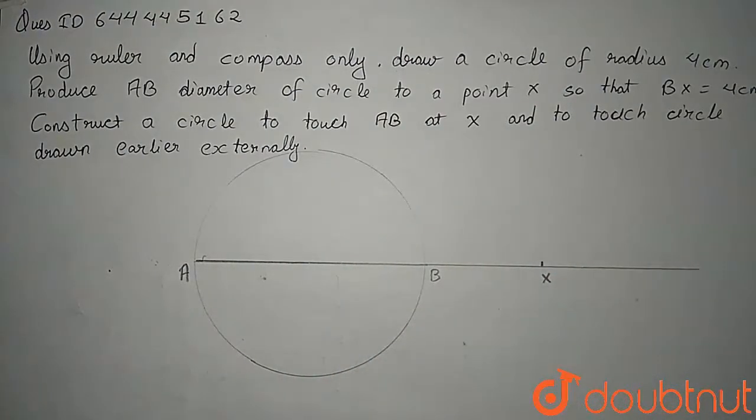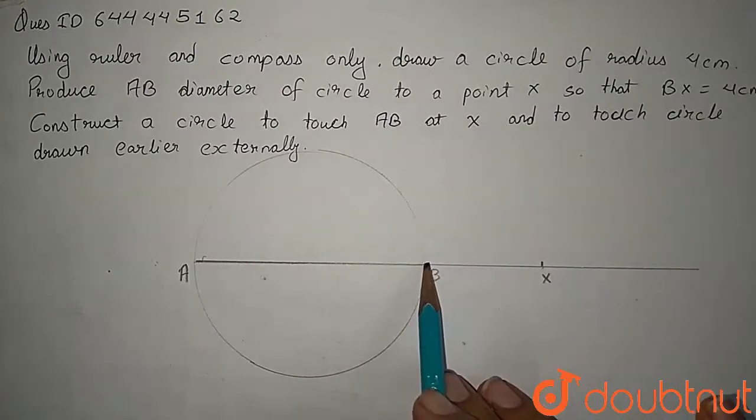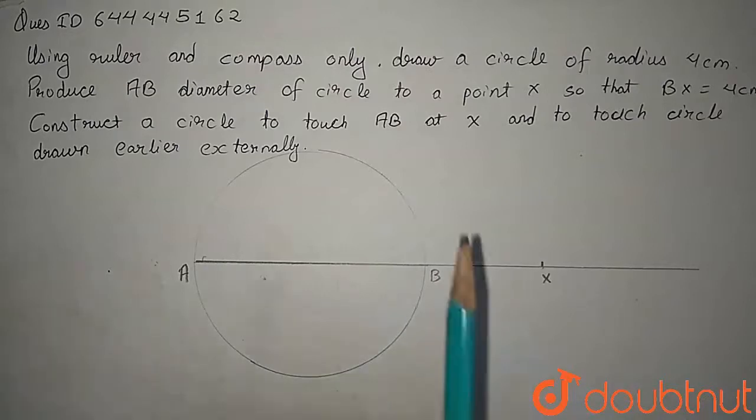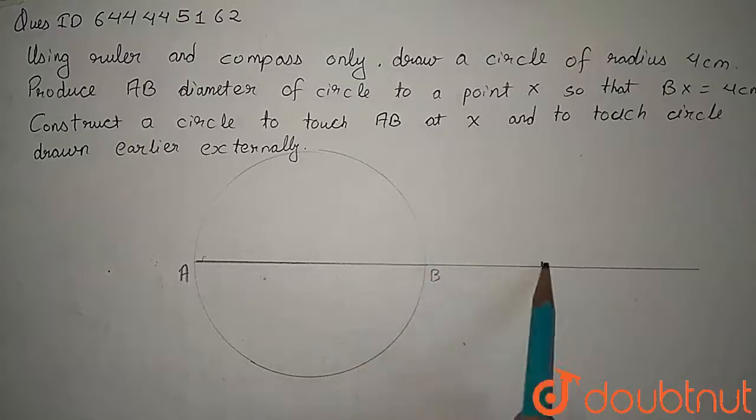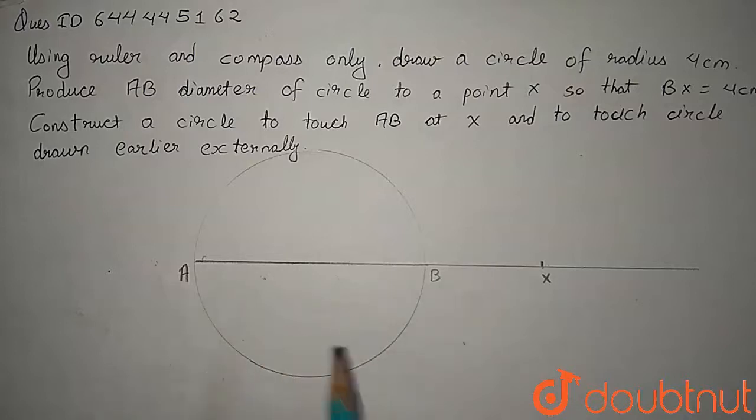Now what we have to do is create another circle which touches this point X and touches this circle externally. So what will be this circle? That circle will be a circle with BX as diameter. So let me perpendicularly bisect and calculate the middle point through which I will draw a circle.